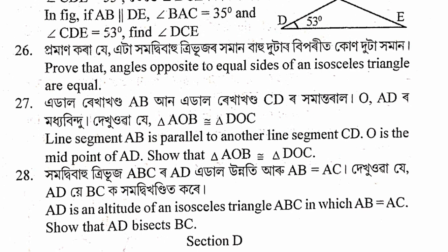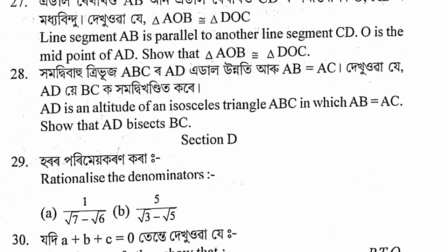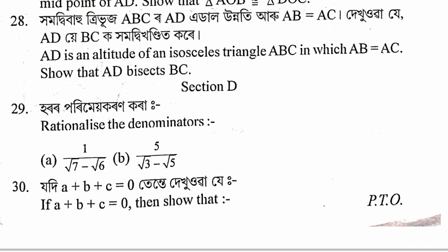In exercise 7.2, we have section D, question 29. This is 1 by root 7 minus root 6, and 1 by root 3 minus root 5, example 19. We rationalize the denominator. Also, a plus b plus c equals 0.